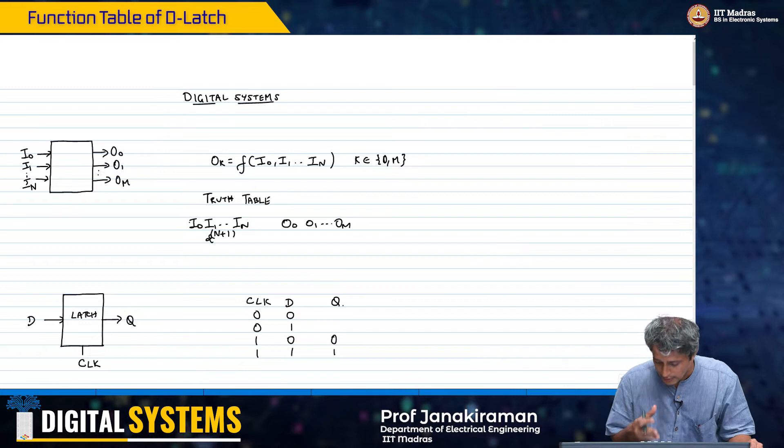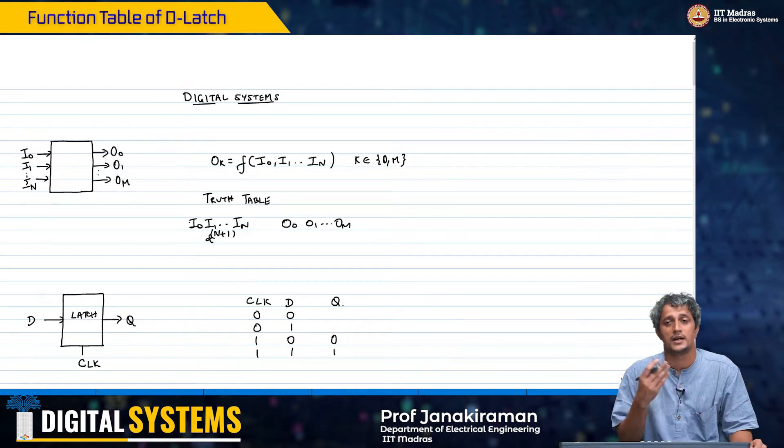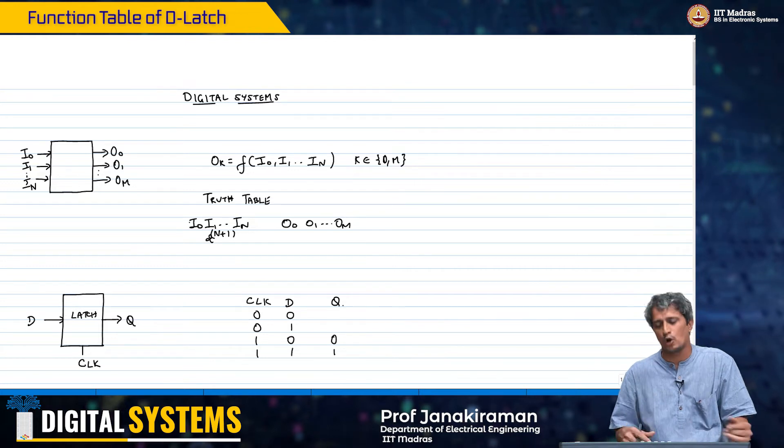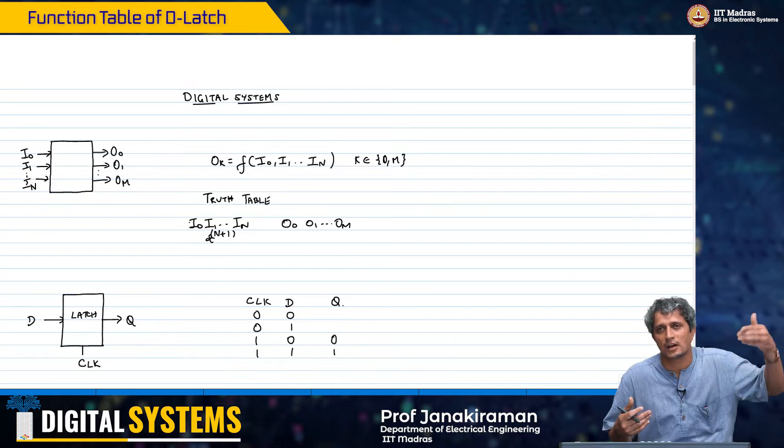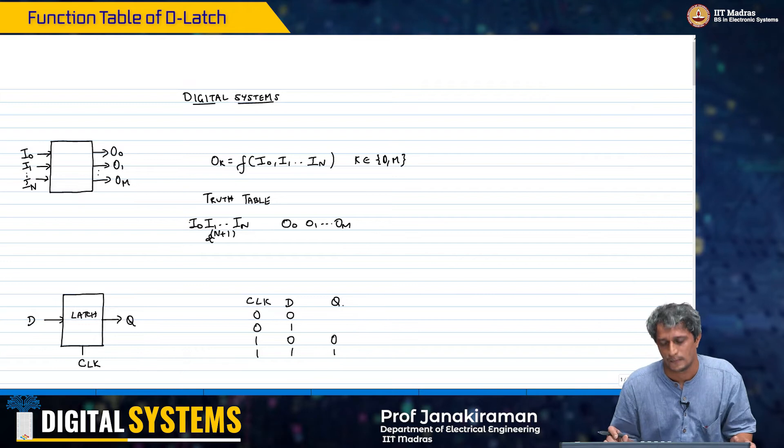Now, the issue with the other things, when the clock is 0 and D is changing from 0 to 1, 1 to 0, we already saw the latch is simply going to ignore any transitions on D in the opaque state.